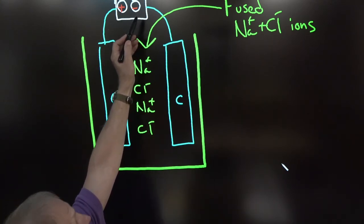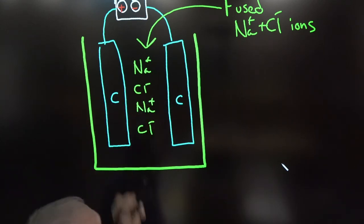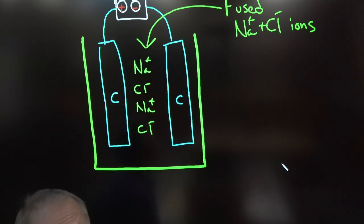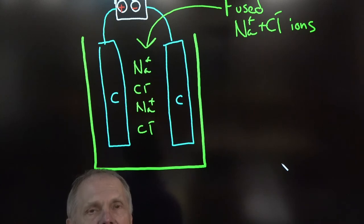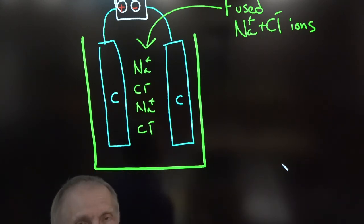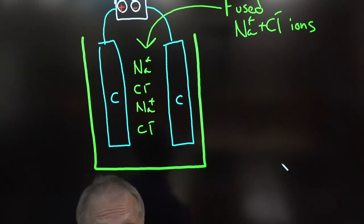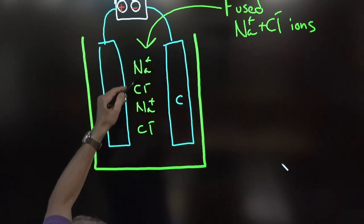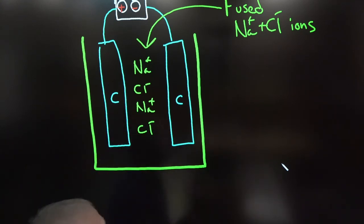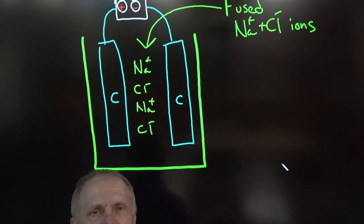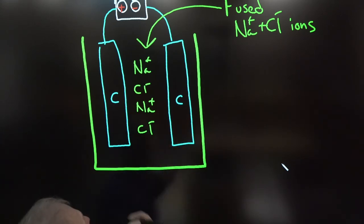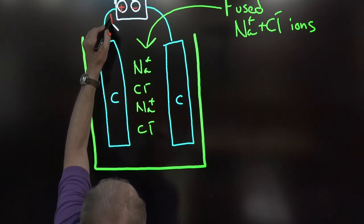In an electrolytic cell we dump a fused or melted ionic compound in the middle — fused or melted because they have free ions. Pure solid ionic compound doesn't conduct electricity. We use fused Na⁺ and Cl⁻ ions. Since the electrodes are made of the same substance, electrons always flow up to the positive terminal and down from the negative. So electrons flow up to the positive and down to the negative.